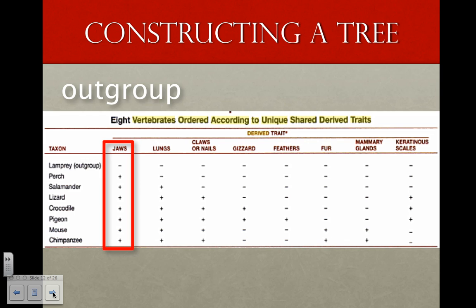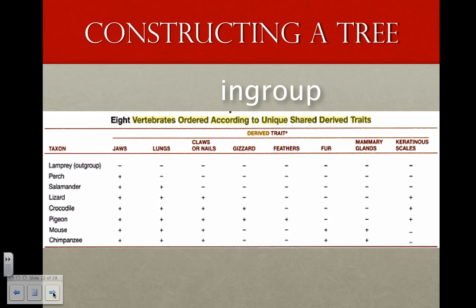Therefore, it is outside the group of interest. An in-group is the group of primary interest. The out-group determines which traits of the in-group are derived, which means they evolved in the in-group, or which are ancestral, meaning they evolved before the in-group. The root of the tree is determined by the relationship of the in-group to the out-group.